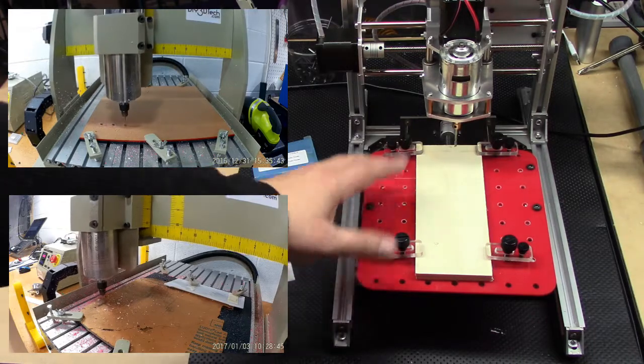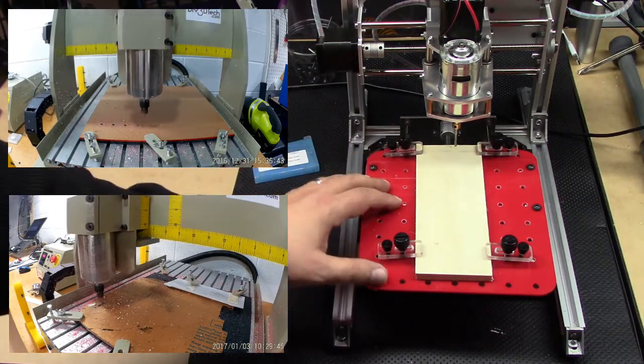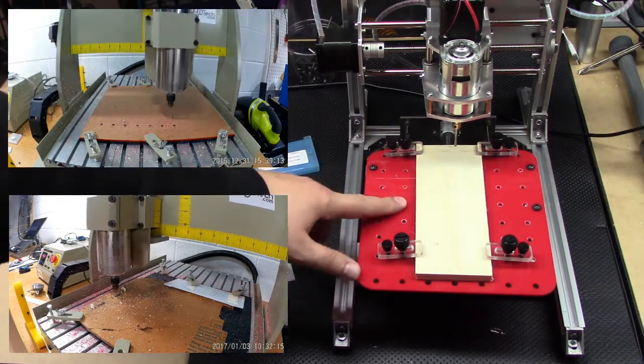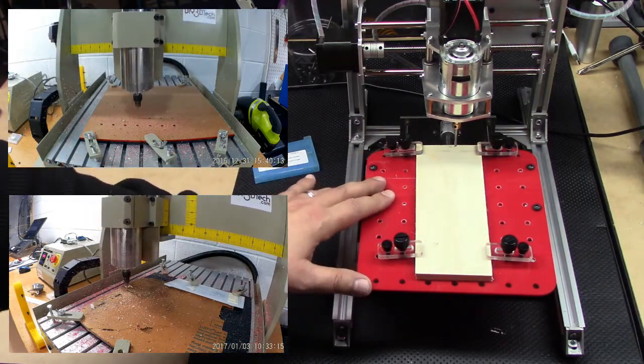What I did, and I'll put some of the time lapses up in the corner, is I cut the bed out of 3mm acrylic on the 3040 CNC.